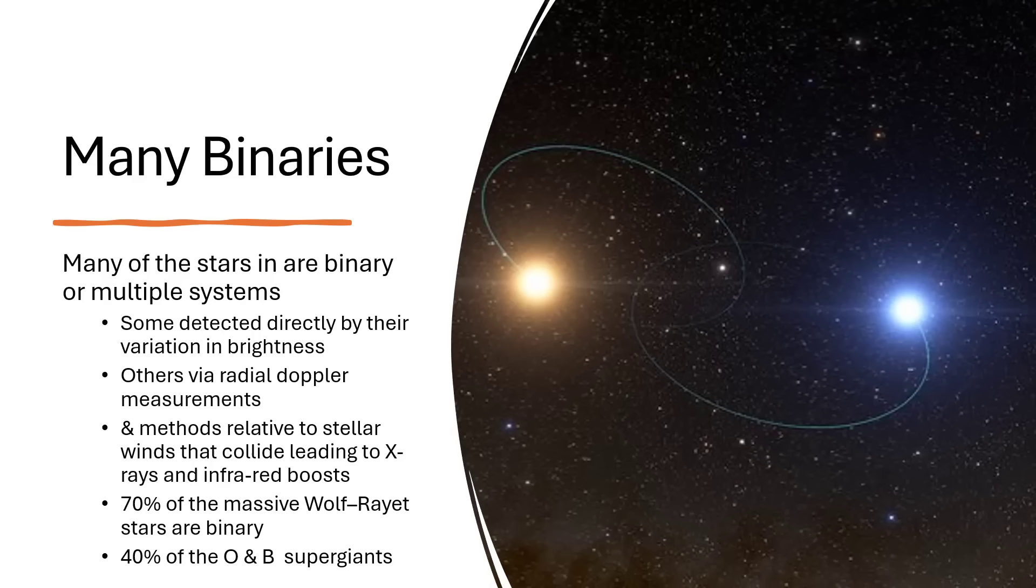70% of the Wolf-Rayet stars are binaries, and 40% of the ordinary O and B supergiants as well. So the larger they are, the more we seem to be finding binaries.